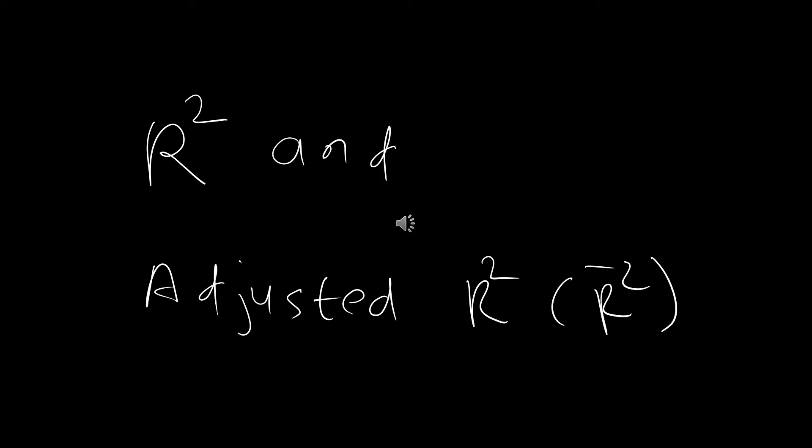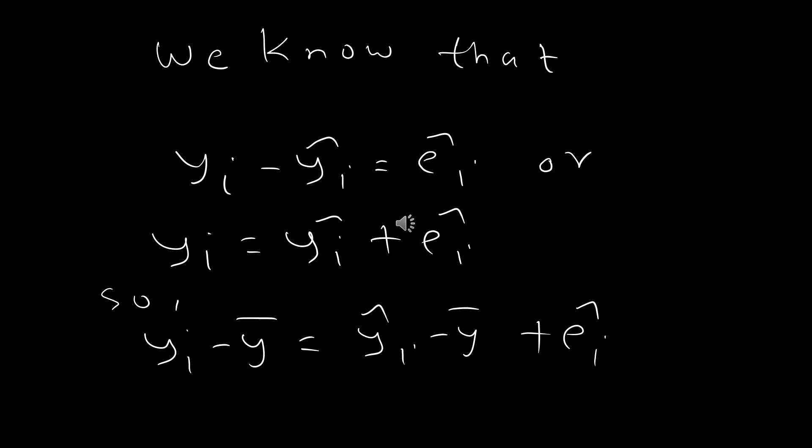In this presentation, we will learn the concepts of R-squared and the adjusted R-squared. Think of a regression model where yi is equal to alpha plus beta xi plus ei, and let y_hat_i be the estimated value of y. We know that yi minus y_hat_i is equal to e_hat_i, or yi is equal to y_hat_i plus e_hat_i, where e_hat_i is the estimated value of the ith error term. Now let me subtract y_bar from both sides. You have then yi minus y_bar is equal to y_hat_i minus y_bar plus e_hat_i.